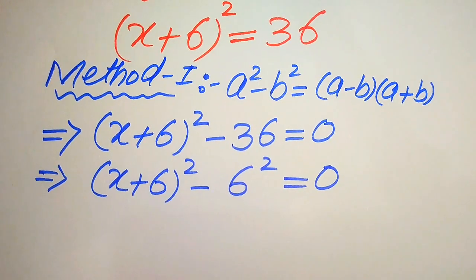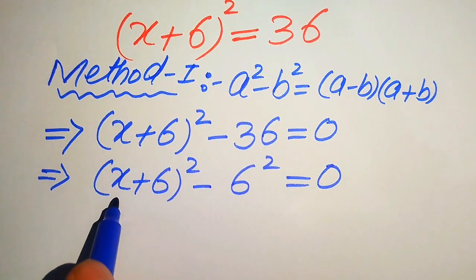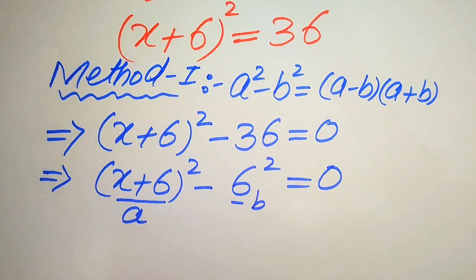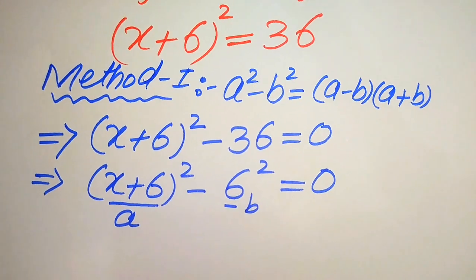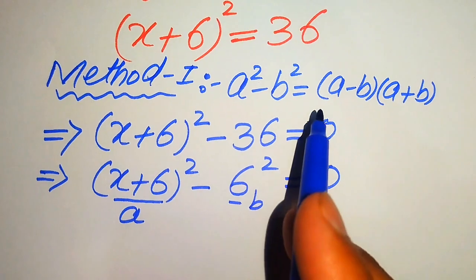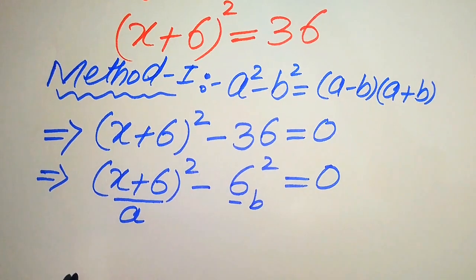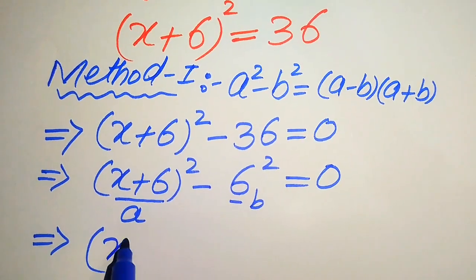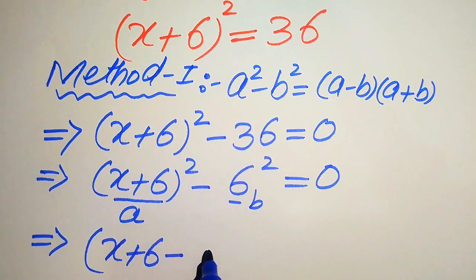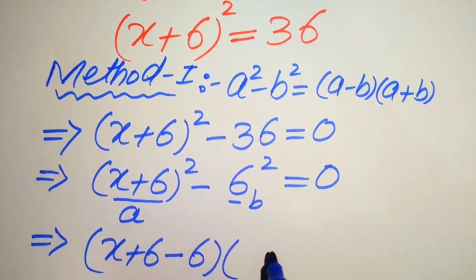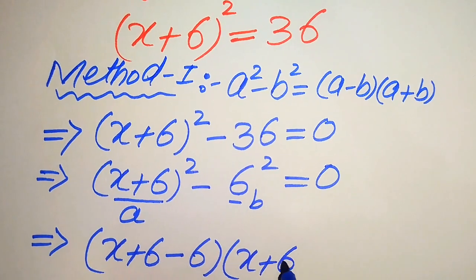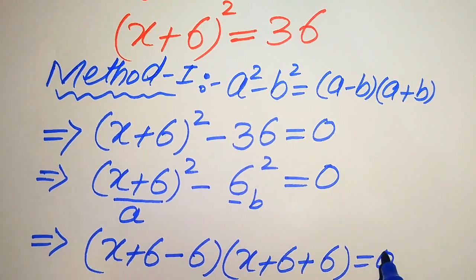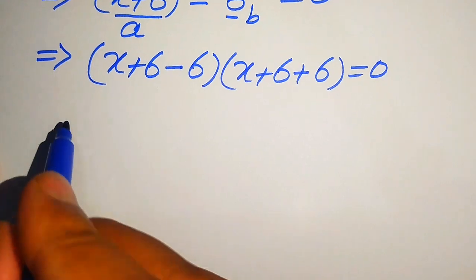Now we identify a and b. The base of the first term gives us a = x + 6, and the base of the second term gives us b = 6. Substituting into the formula, we write (a - b)(a + b) = 0, which becomes (x + 6 - 6)(x + 6 + 6) = 0.